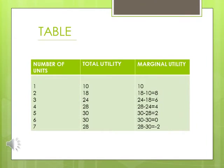The following table shows the utility derived from consumption of a commodity. Utility is usually measured in utils, and cardinal numbers are used here. The first unit of consumption provides 10 units of satisfaction. The second unit provides an additional 8 utils. The third provides an additional 6 utils. Thus, if 3 units are consumed, total utility is equal to 24 utils.